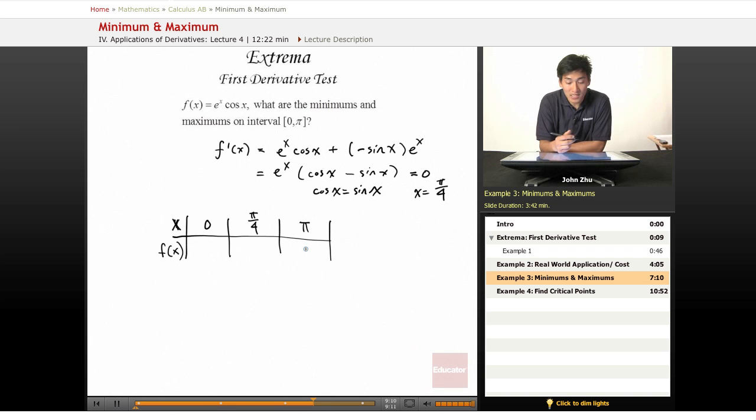So at 0, the original expression becomes basically cosine of 0, so e to the 0 cosine of 0. This is 1. At pi over 4, e to the pi over 4 cosine of pi over 4.